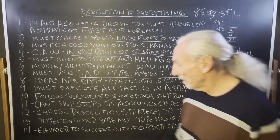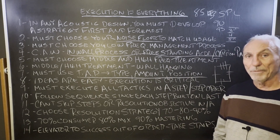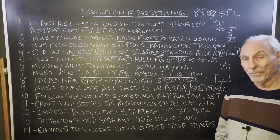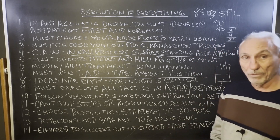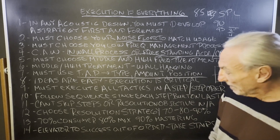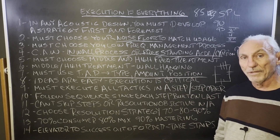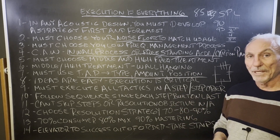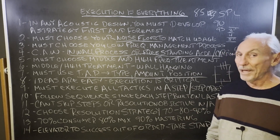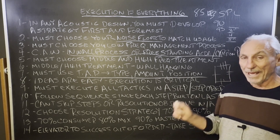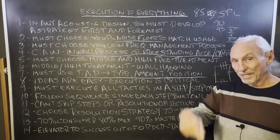Let's talk about the three types: 70, 80, and 90 percent. Seventy percent is consumer — home theater, personal listening environment. Some consumers want 90 percent — mastering level resolution. Some want mix engineer resolution at 80 percent. This is the benefit of defining the strategy at the beginning and then assigning the appropriate tactics to it. The elevator to success is out of order — you have to take the stairs one step at a time. Every step you take is built on the step you just took. Execution is everything when it comes to critical listening environments.